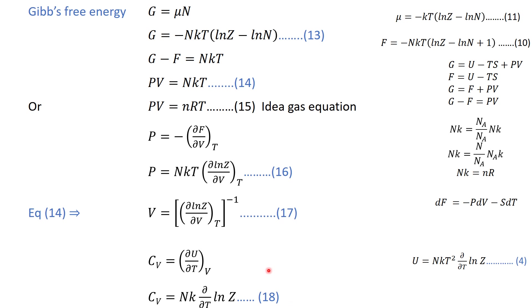This covers all the thermodynamic quantities calculated in terms of the partition function. The next lecture will be about the specific heat of solids, where we will discuss the classical Dulong-Petit law, then the Einstein correction, and then the Debye correction. Thank you.